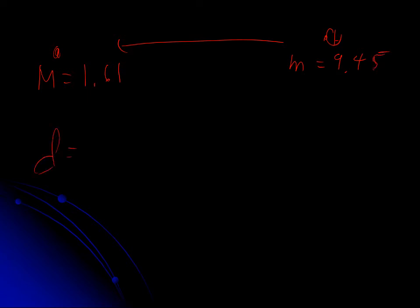The distance modulus formula: 10^((m-M+5)/5). So that's 10 raised to the exponent (9.45-1.61+5)/5.